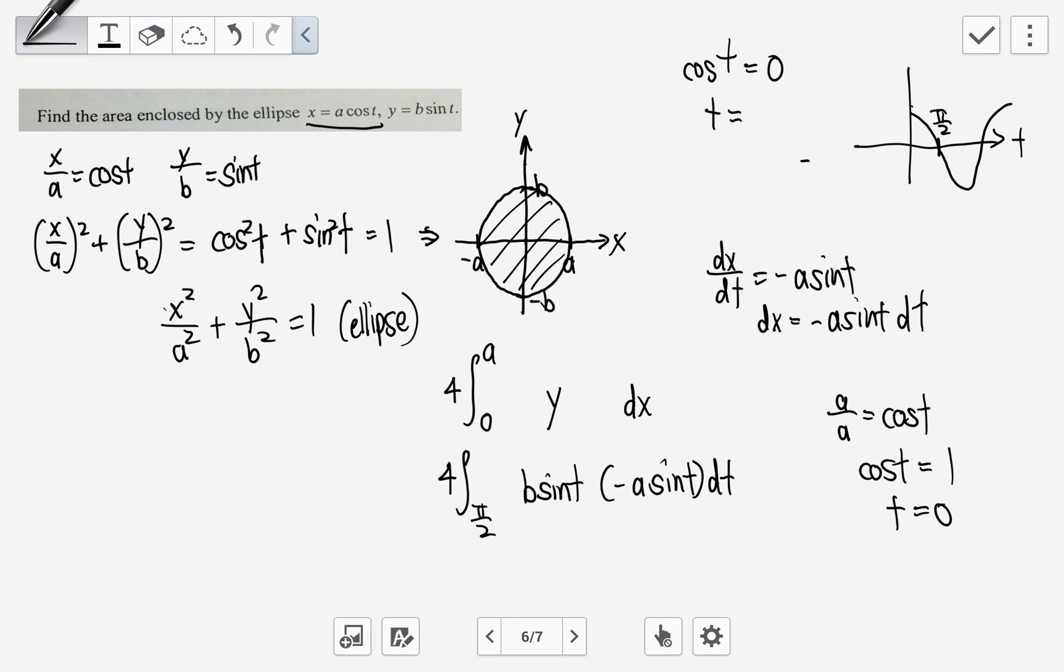So I would do 0 to pi over 2. T equals to 0 will give me a. So then we have this. Minus a, b. I can actually bring them out because they are constants. So minus 4ab, integrate pi over 2 to 0, and sine t times sine t is sine squared t dt.